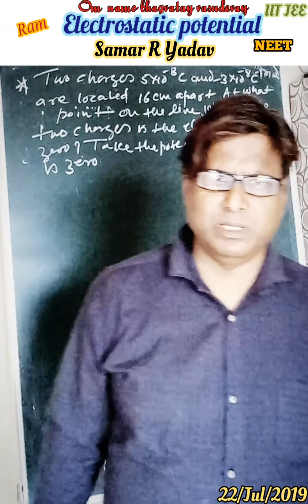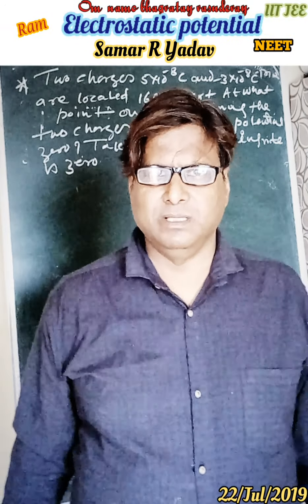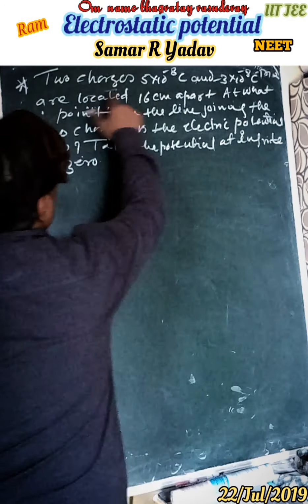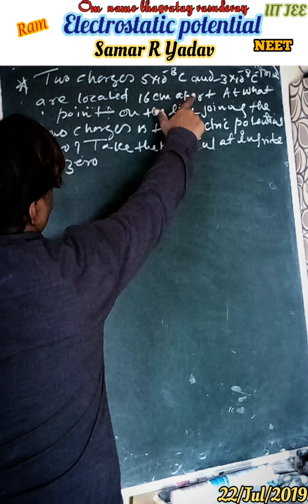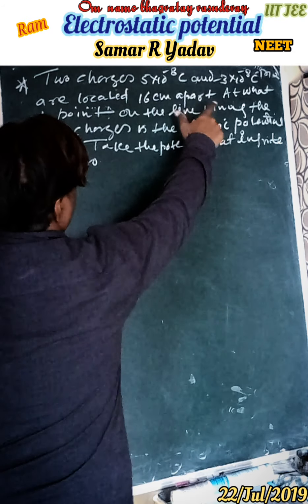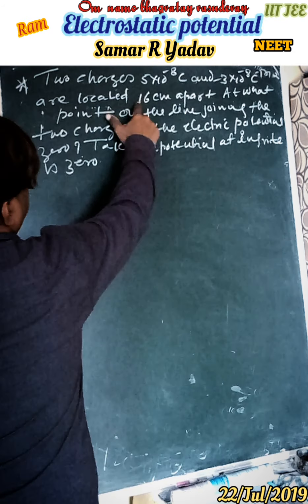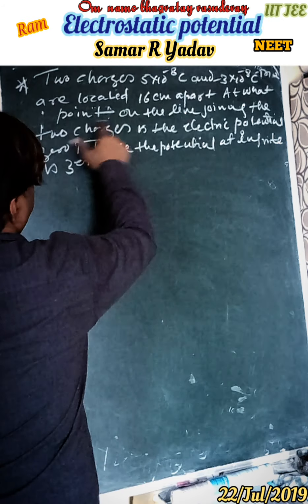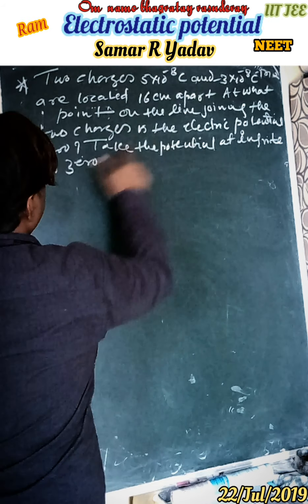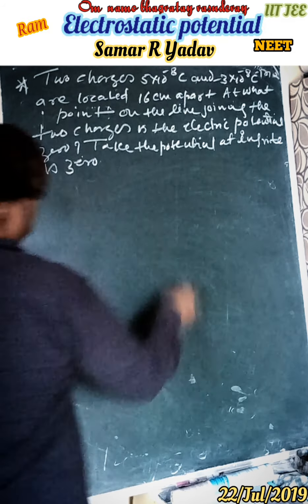Today in physics, we have a numerical problem. Two charges: 5 times 10 to the power minus 8 Coulombs, and minus 3 times 10 to the power minus 8 Coulombs, are located 16 centimeters apart. At what point on the line joining the two charges is the electric potential zero? The electric potential at infinity is taken as zero.